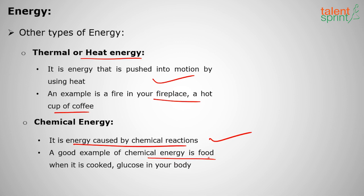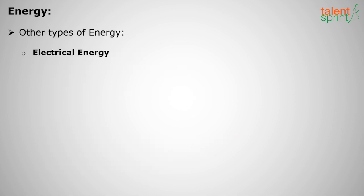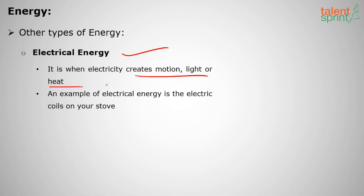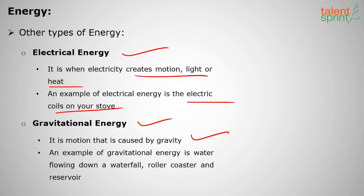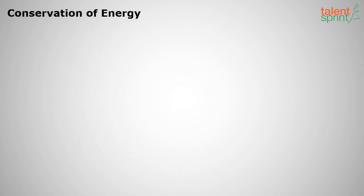Chemical energy is energy possessed through chemical reactions — for example, food provides glucose in our body, or reactions in a nuclear reactor generate power. Electrical energy is when electricity creates motion, light, or heat — electric coils on a stove convert electrical energy into heat energy. Gravitational energy comes from gravitational fields — rivers flow from higher to lower altitude due to gravity, as seen in waterfalls and reservoirs.